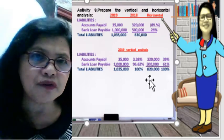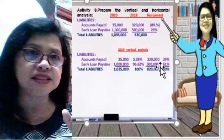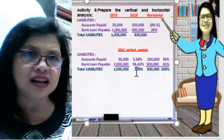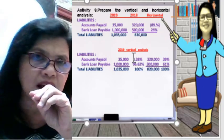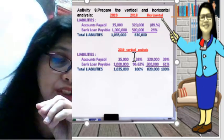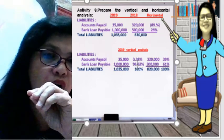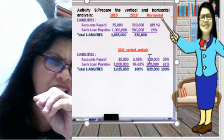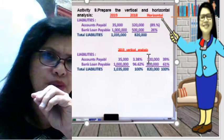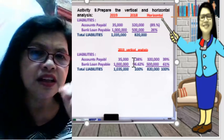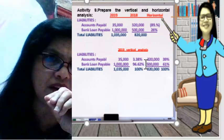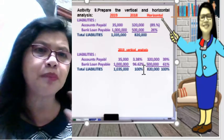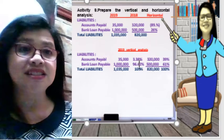Now let's go to the liabilities for the vertical analysis. We compare one account to the base account. In this case, accounts payable of 35,000 over total liabilities of 1,035,000 gives 3.38%. Then 1,000,000 divided by 1,035,000 gives 96.62%, arriving at 100% for the total liabilities base account.